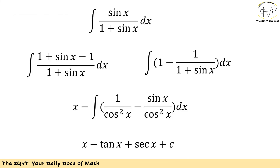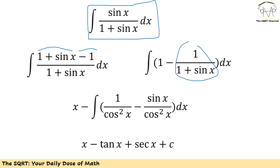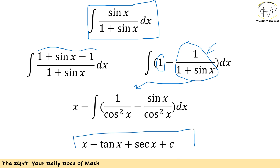Now let's put everything together. We started with the integral of sine of x over 1 plus sine of x, dx. We replaced sin(x) in the numerator with 1 plus sine of x minus 1, and showed that the integral becomes the integral of 1 minus 1 over 1 plus sine of x, dx. The integral of 1 dx is just x. Putting everything together, the final answer is x minus tan(x) plus secant(x) plus a constant C.